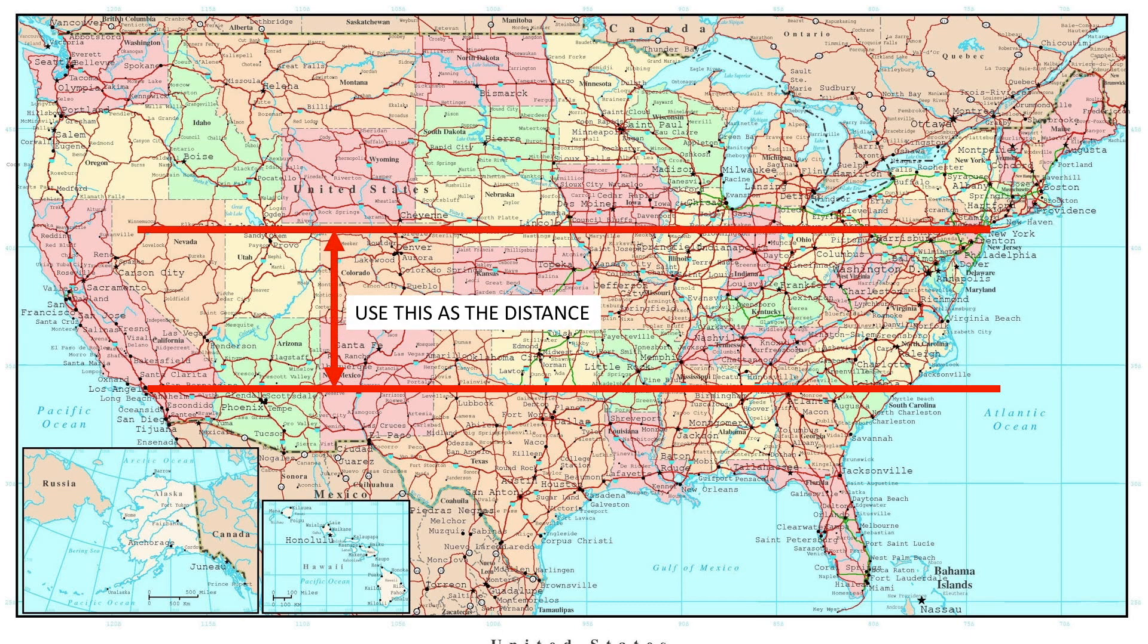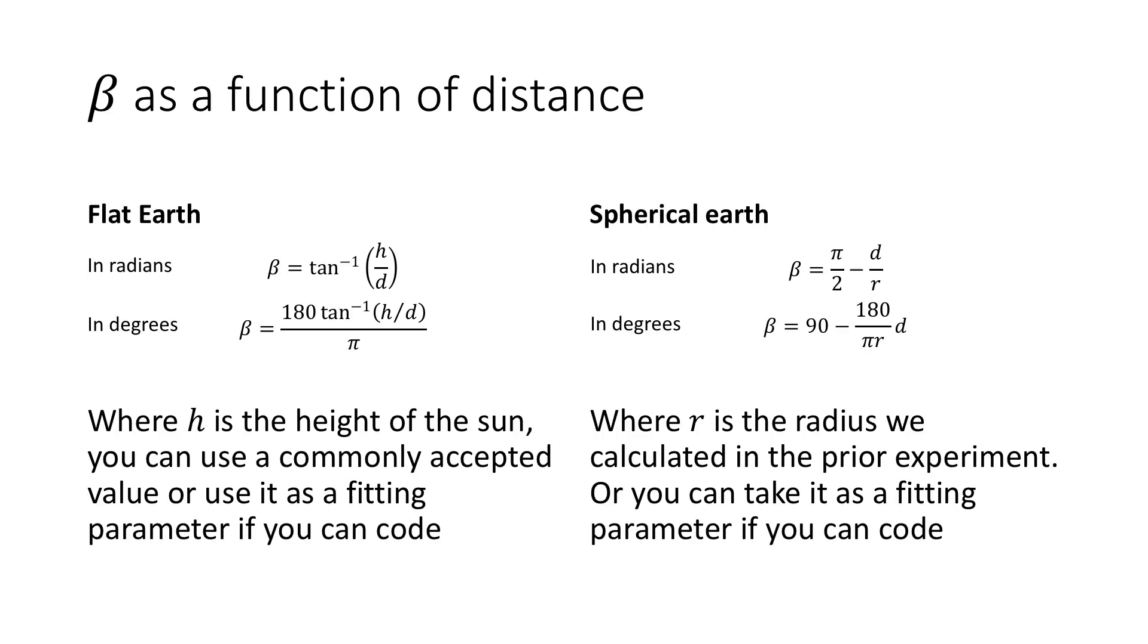Now we have found a radius, but this measurement hinges on the earth being a sphere. We can extend the experiment to determine whether this assumption is true by adding measurements and calculating the solar inclination over the angle beta. We then plot the angle beta against lateral distance from some reference measurement. If the earth is flat, beta will take the form of the inverse tan of h over d, where h is the height of the sun and d equals zero where the sun is directly overhead.